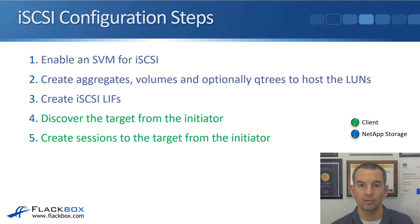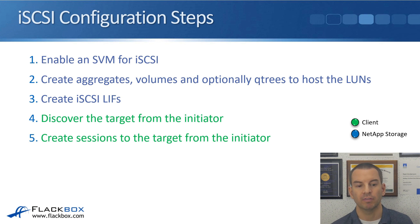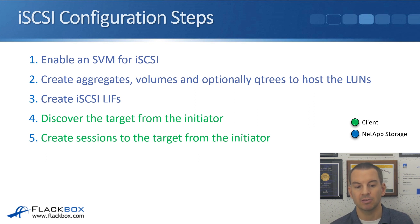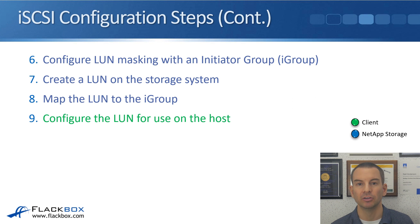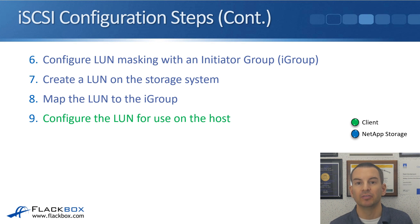Then create your iSCSI logical interfaces. Then go on to the client — the initiator, for example a Windows or Linux client — and discover the target from the initiator. So from the client, you discover the storage system, then create sessions to the target from the initiator. Back on the ONTAP system, configure LUN masking with an initiator group — the terminology for LUN masking in ONTAP is the initiator group, usually called an iGroup. Next, create a LUN on the storage system, which is the virtual disk for the client, and map the LUN to the iGroup to tie them together. Finally, connect to the LUN from the client and configure it for use — meaning format it.